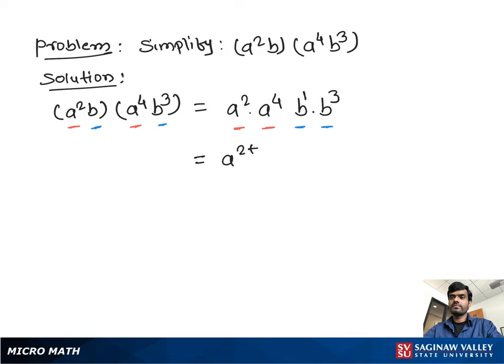Then, using exponent properties, we can write a to the power 2 plus 4, b to the power 1 plus 3, which gives us a to the power 6 and b to the power 4. That's it.